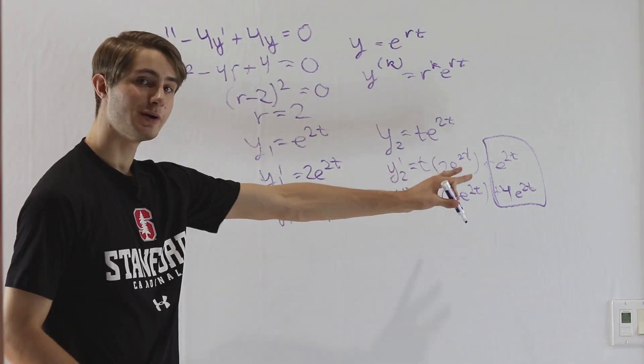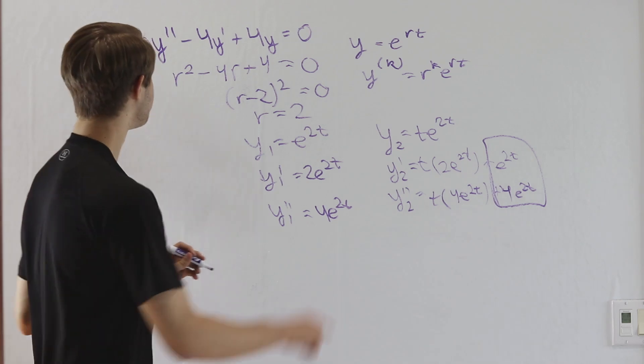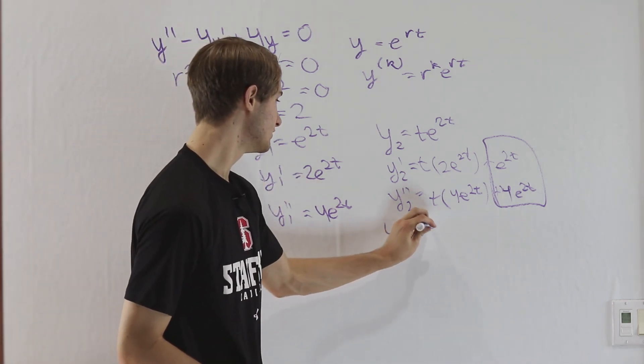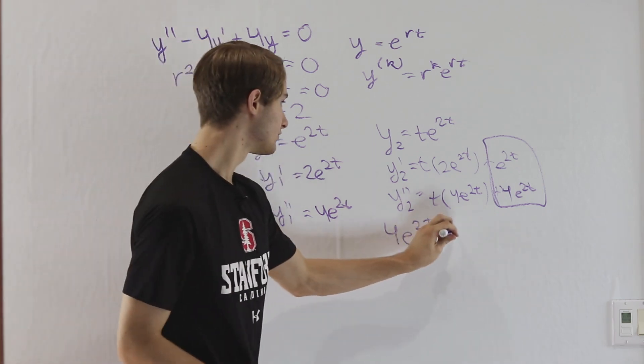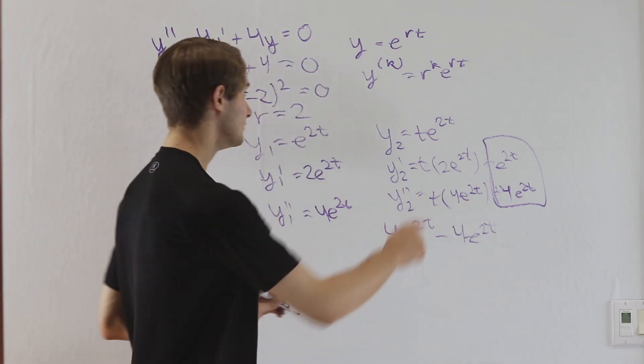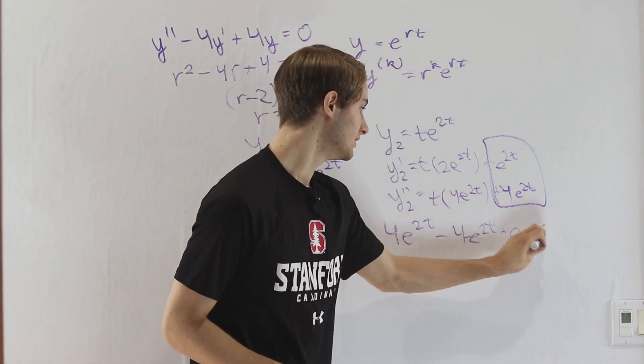So let's think about what happens when we plug this section in to our differential equation. Y double prime is going to be 4 e to the 2t. And then minus 4 times y prime is e to the 2t. And then we don't have anything left for our y, so that's just plus zero equals zero.